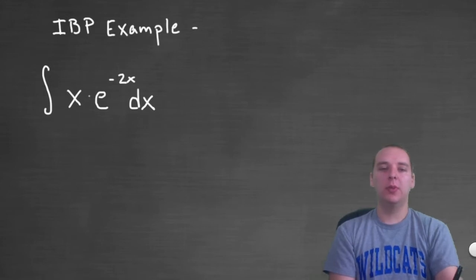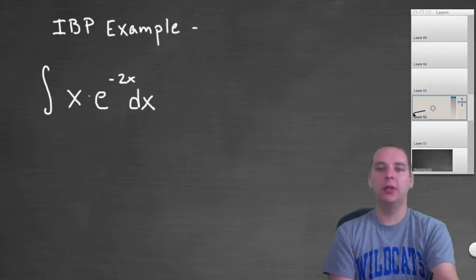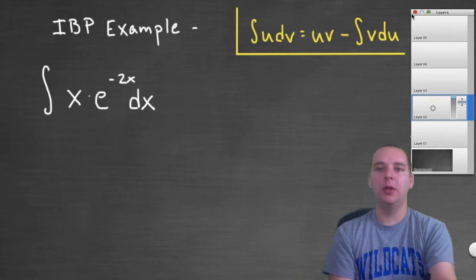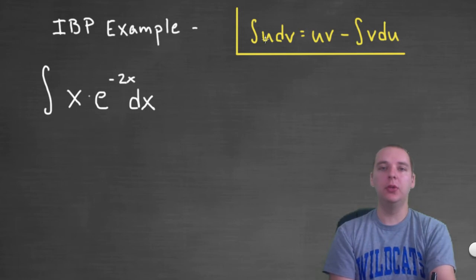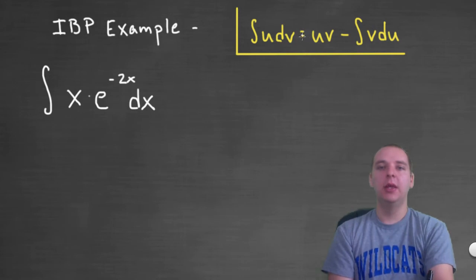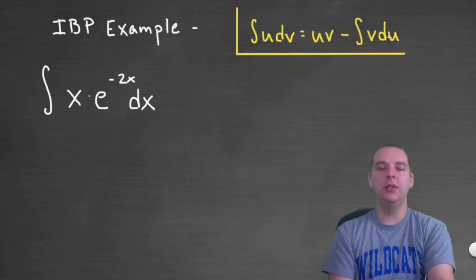Let's remind ourselves what integration by parts says — I have it written up here. Integration by parts says that the integral of a product, where we make a choice on u and dv, equals u times v minus the integral of v du.